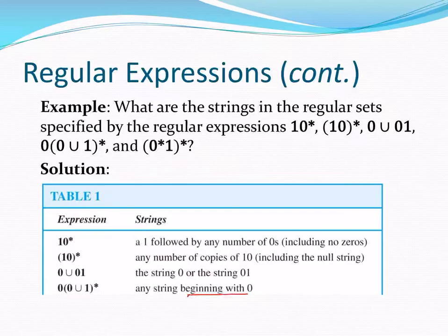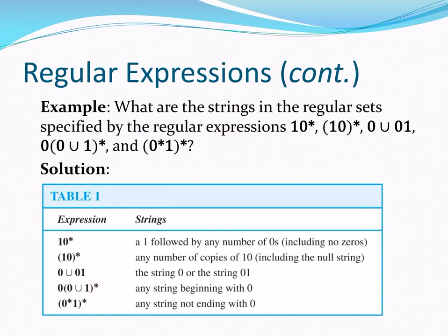This last example is the Kleene closure of the whole expression (0*1)* — the Kleene closure of '0 concatenated with 1'. Notice it can never have a zero at the end of any string generated this way, so it represents any string not ending with a zero. Of course, that includes the empty string, since the empty string doesn't end with a zero.